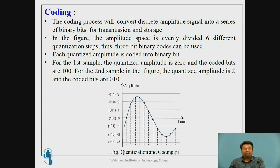The coding process converts the discrete amplitude signal into a series of binary bits for transmission and storage. As shown in the figure, the amplitude space is evenly divided into 6 different quantization steps. Thus, 3-bit binary codes can be used to convert this analog signal into a discrete signal.